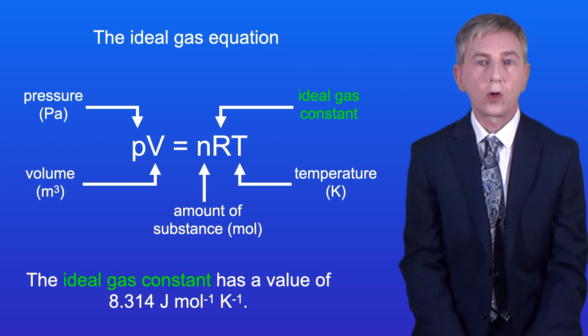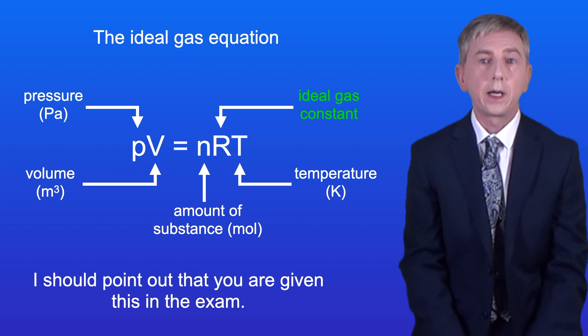The ideal gas constant has a value of 8.314 joules per mole per Kelvin, and I should point out that you're given this in the exam.